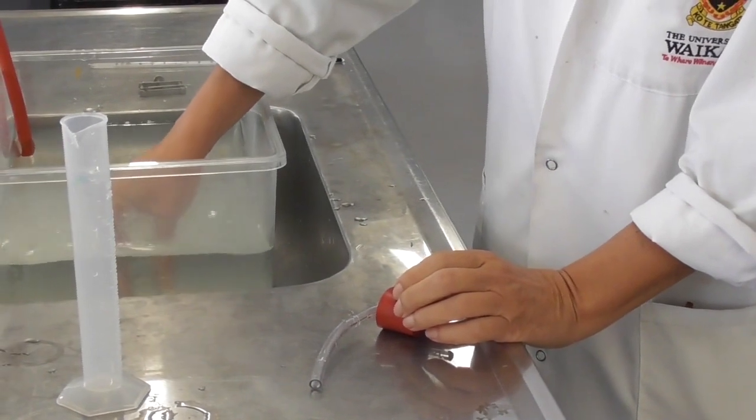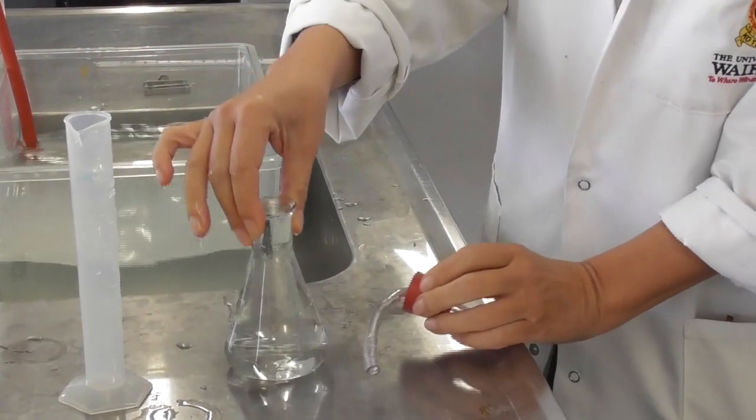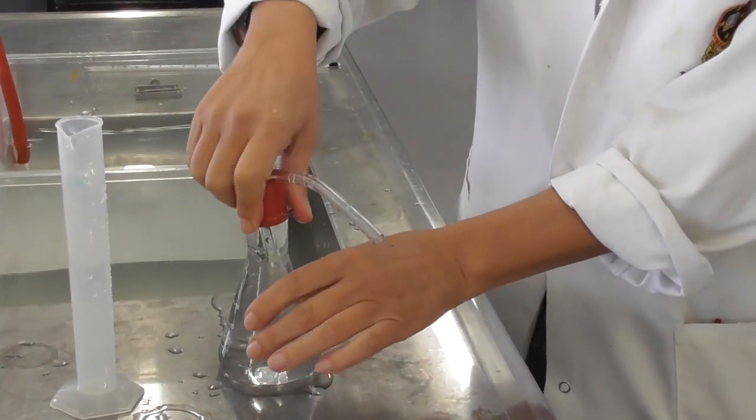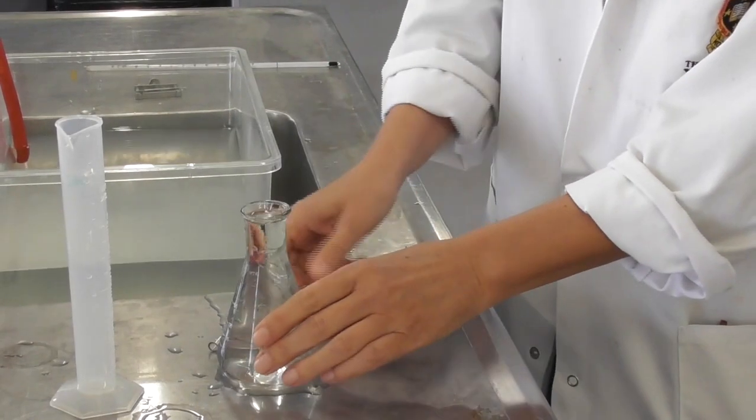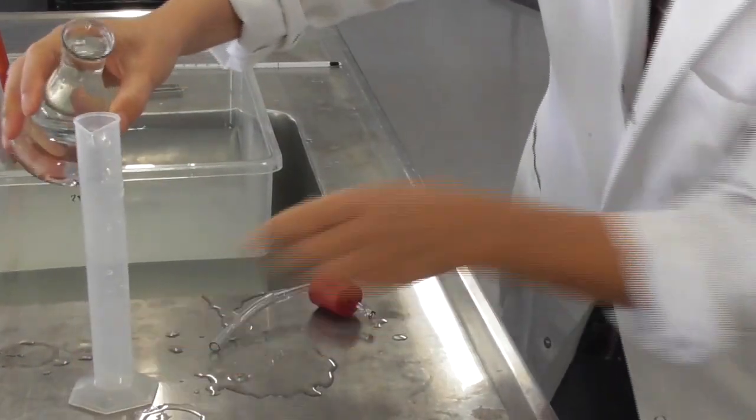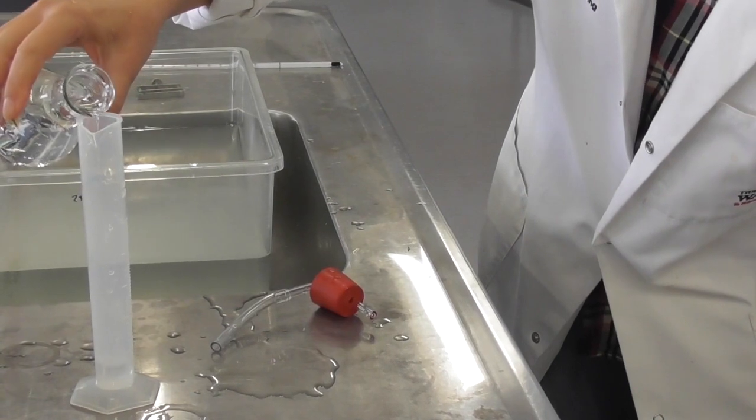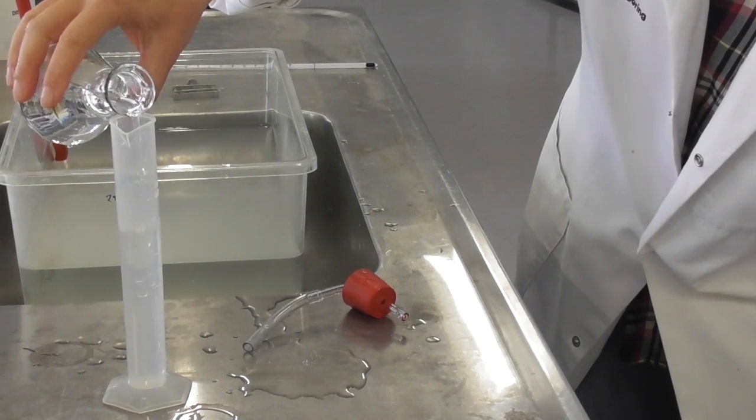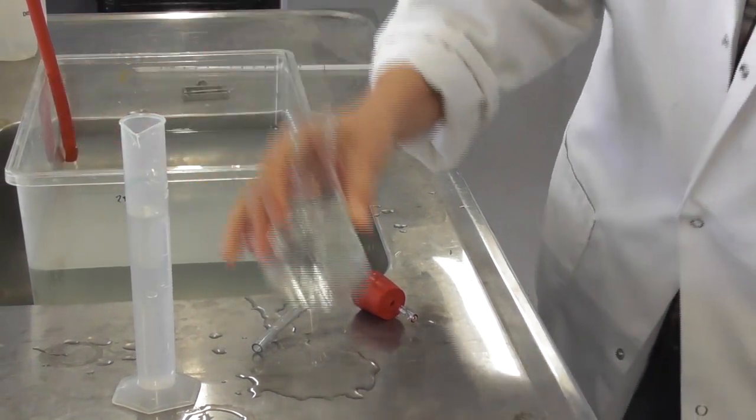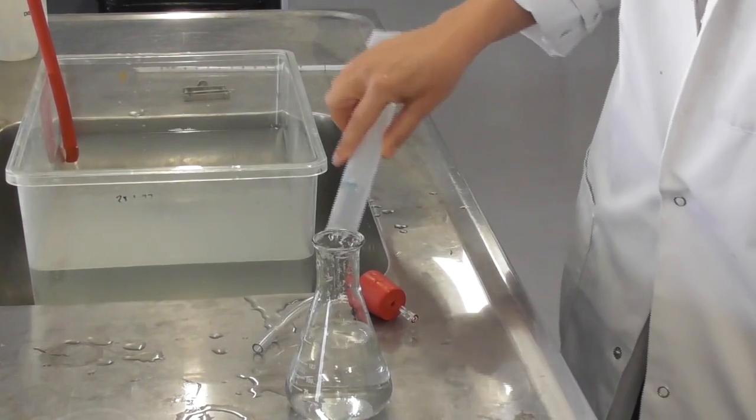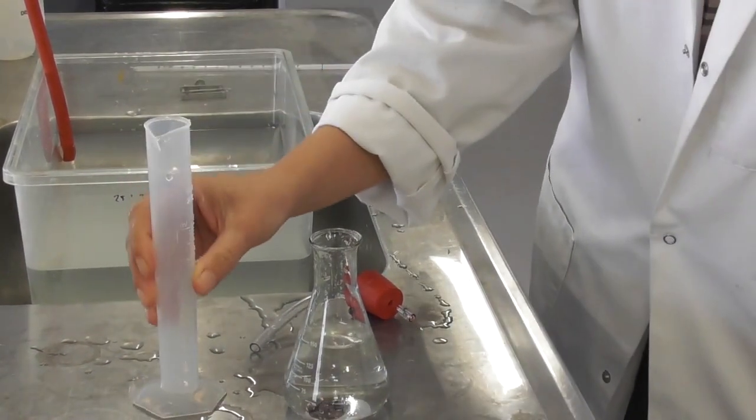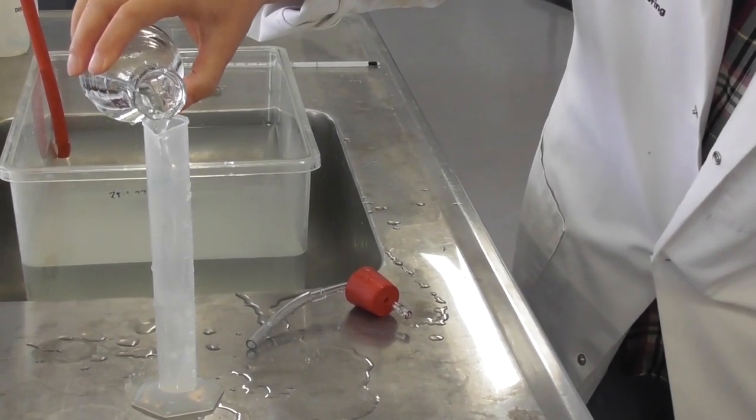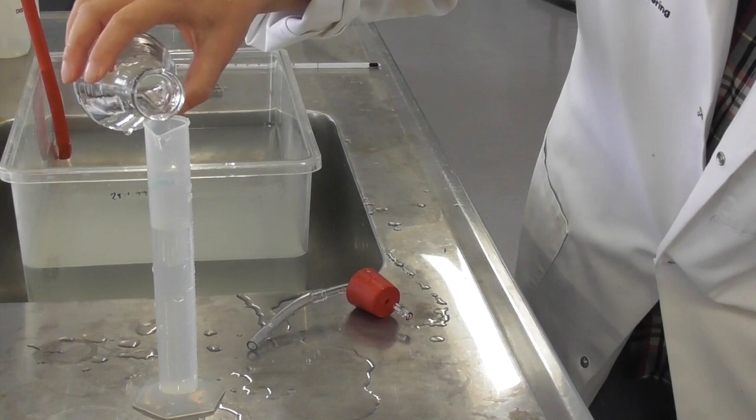To determine the overall volume of the flask we fill it to the top with water, attach the bung again, and take it out. Now we have the exact volume of the air inside the flask at the start of the experiment measured out in water. As it is more than 50 milliliters we have to fill our measuring cylinders a few times with the water from the flask.